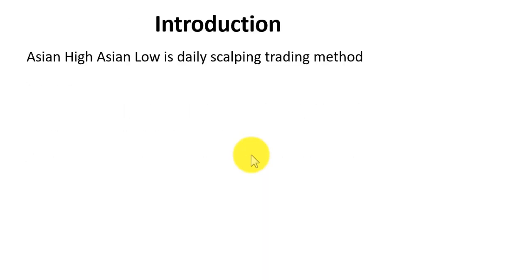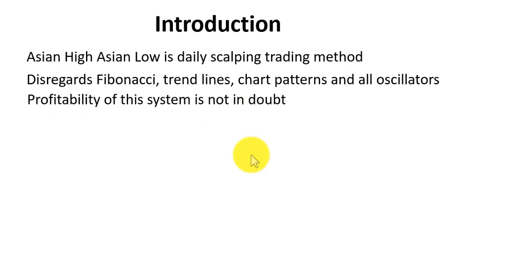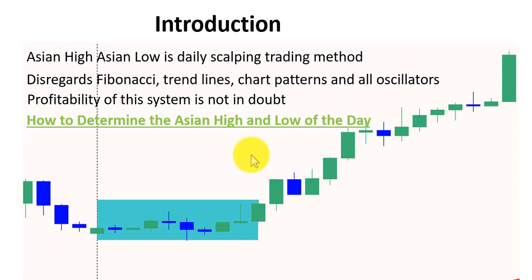So let's introduce it. What is it? This strategy is very simple — it's just finding the high and the low of the Asian session. It's a kind of scalping method. We are not going to use trend lines, chart patterns, or anything like that. Look at the chart on the screen. What you notice, first of all, is a box — this is called the breakout box or the Asian box.